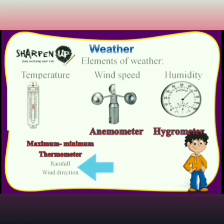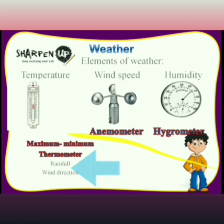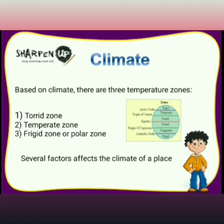Rainfall occurs when there is high humidity in the air and a sudden drop in temperature. When clouds become very heavy, they burst and fall down as rain. A rain gauge is an instrument used to measure rainfall, and rainfall is measured in millimeters.